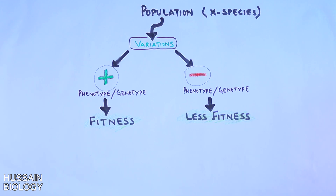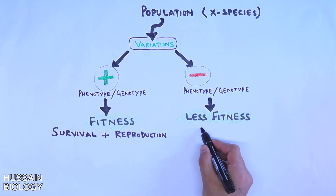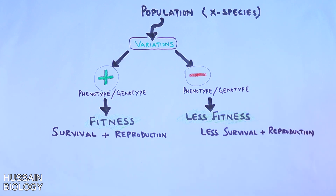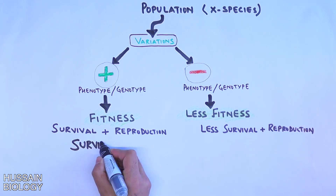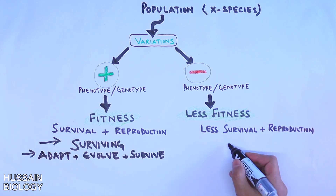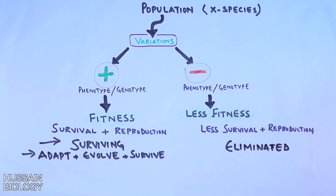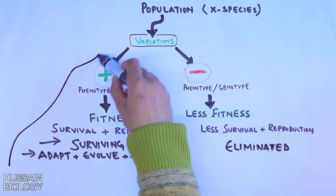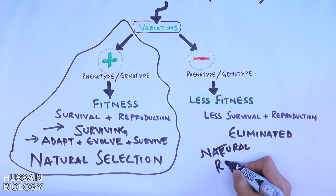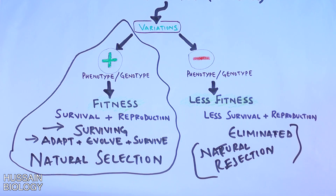More fitness means more survival and more reproduction, and less fitness means less survival and less reproduction. So the species with higher fitness adapts, evolves, and survives, whereas the species with lower fitness is eliminated. The species with higher fitness is naturally selected through the process of natural selection, while the other is rejected. The survival of the fittest comes into play here.